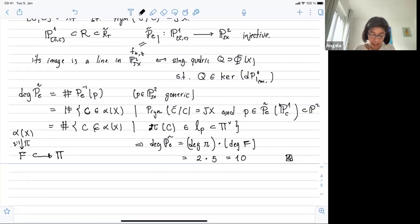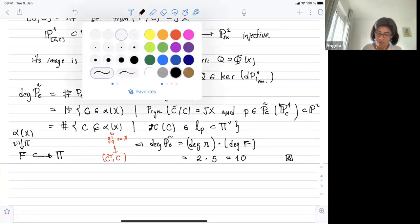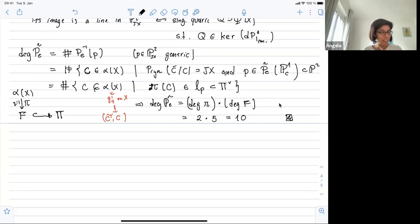Does it look understandable? So maybe the point I kept the notations of Donagi Smith, but I'm not so happy with the notation C in alpha x. So one has to understand that an element here is a G1 four on x. And with the G1 four from x, you always construct the C tilde c. This is a trigonal construction. Any question? If you don't have questions, I'm gonna keep going. Go to the boundary.